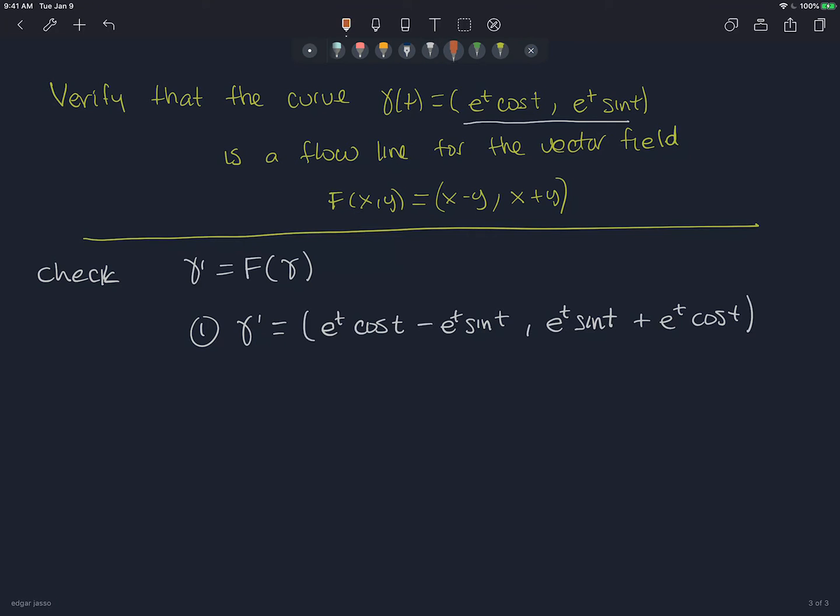Now let's try to find f of gamma. So to find f of gamma, what I do is I'm plugging in, I'm evaluating at gamma, which means my x is e^t cos t, and y is e^t sin t. I'm evaluating this as my x, this as my y, and my input is gamma.